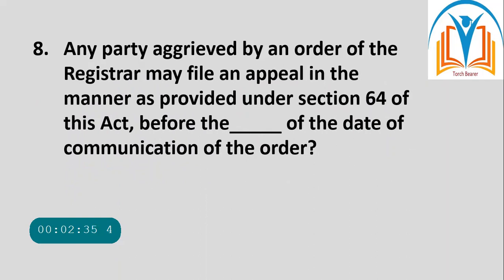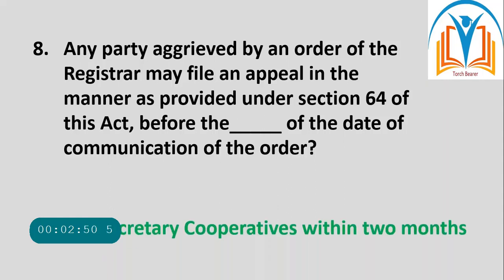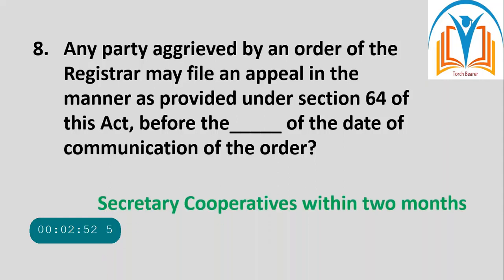Next question: Any party aggrieved by an order of the registrar may file an appeal in the manner as provided under Section 64 of this Act before the Secretary Cooperatives, within two months of the date of communication of the orders.